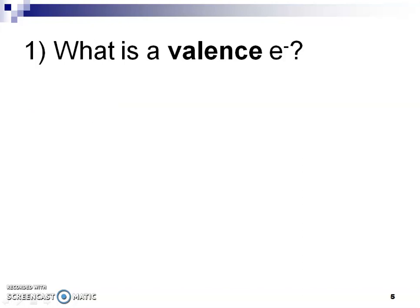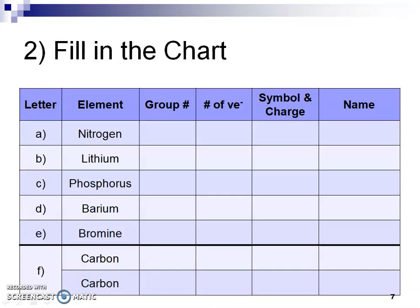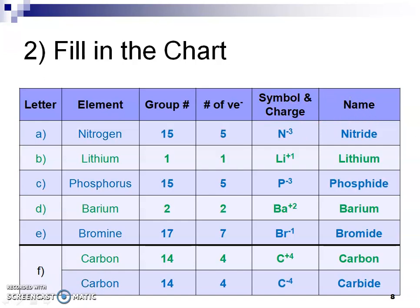Here, number one, answer. Number two, again here's that chart, and there is a reason why I put carbon down twice, so can you figure that out? Hopefully you paused, you used your real periodic table to find the elements. You used your valence electrons chart to come up with the other stuff. Hopefully you came up with symbol and charge and the name of the ion as well.